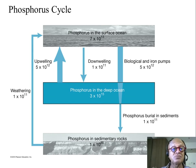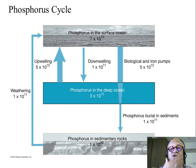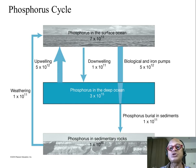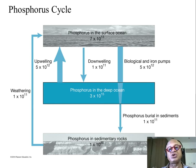Weathering means rain and water flowing into the surface ocean. In the deep ocean you have more phosphorus — 3×10^15 — because there is recycling and accumulation.